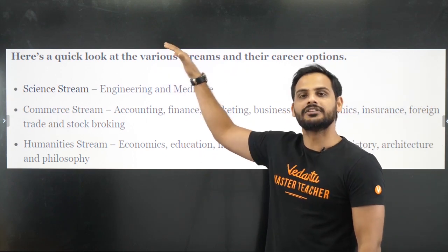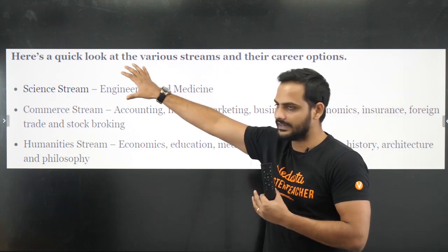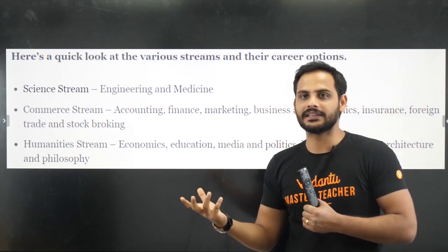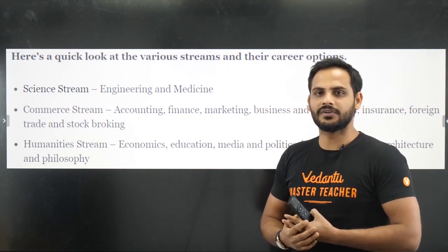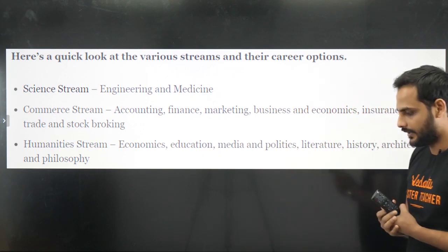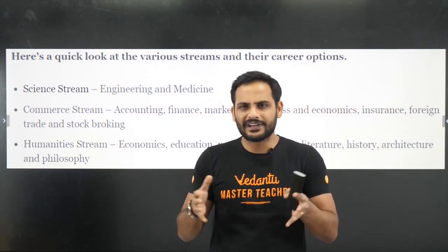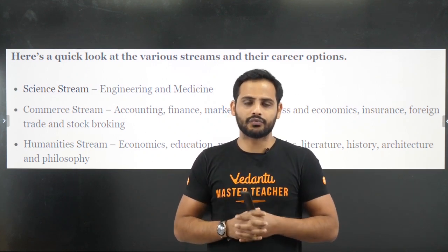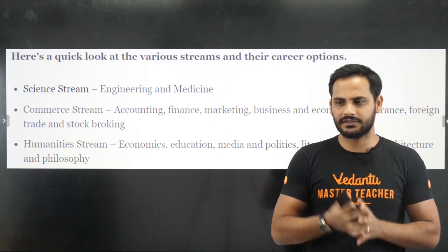In the Science stream you will mostly be dealing with technology — medical technology, biotechnology, mechanical technology, civil technology, and so on. In Commerce you will mostly be dealing with economics — how money works, how firms grow, microeconomics and macroeconomics. In the Humanities stream you will be learning about history, political science, how polity works, how world politics is moving, and you can even go into writing books. It all depends on which stream you are most interested in.